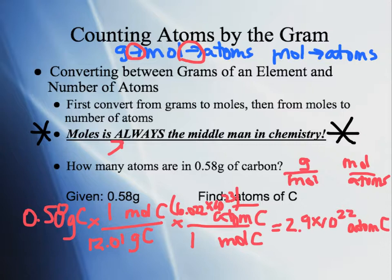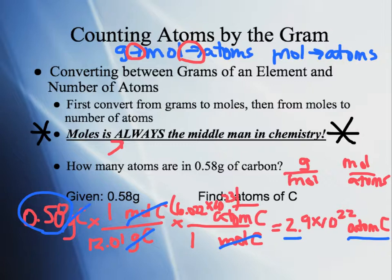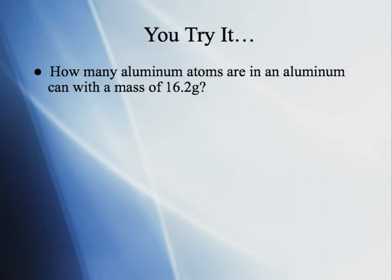Checking: we start with 2 sig figs and have 2 in our answer — good. All units cancel to leave atoms of carbon — good. Does the number make sense? We multiply 0.58 times 6.02 times 10 to the 23rd, getting a number lower than Avogadro's number, then divide by 12 to get an even smaller number. So 2.9 times 10 to the 22nd is reasonable — if you got something times 10 to the 48th, that would be a red flag.